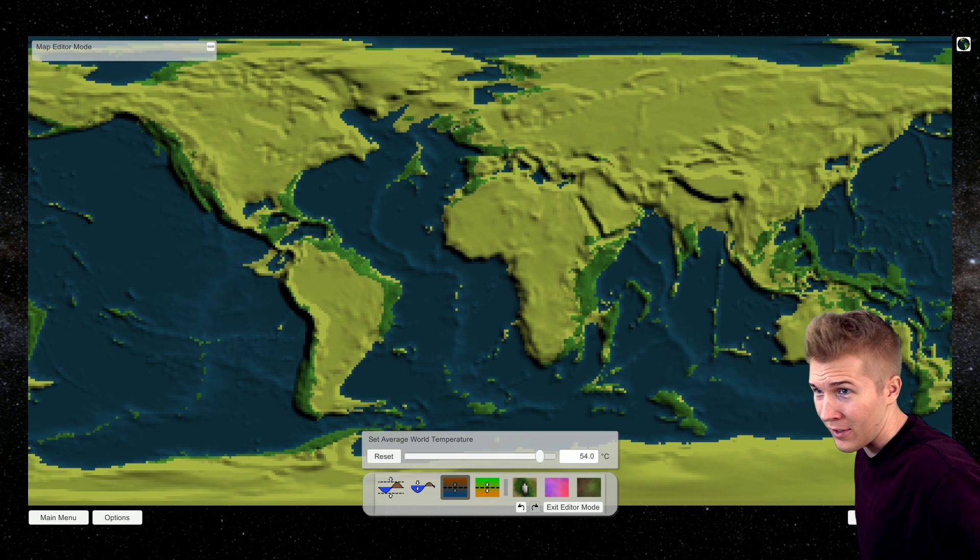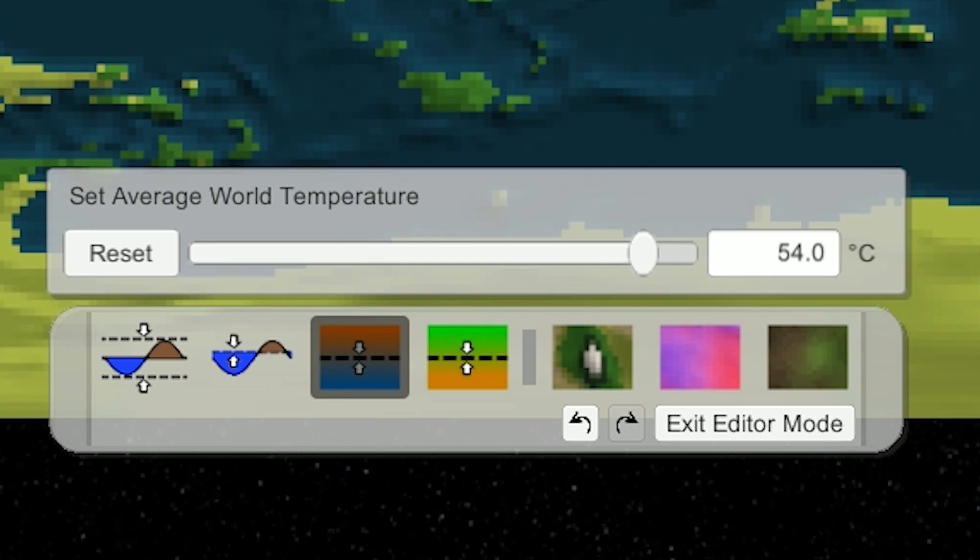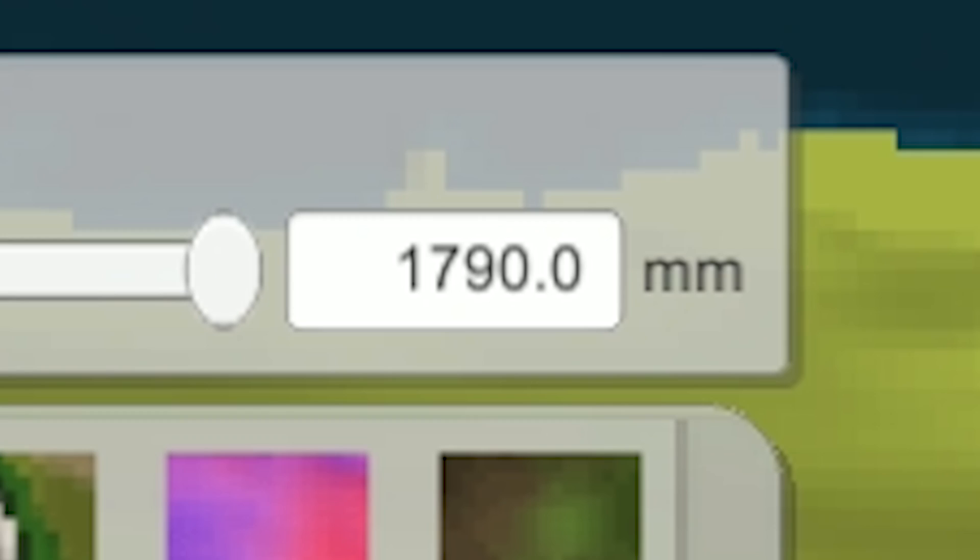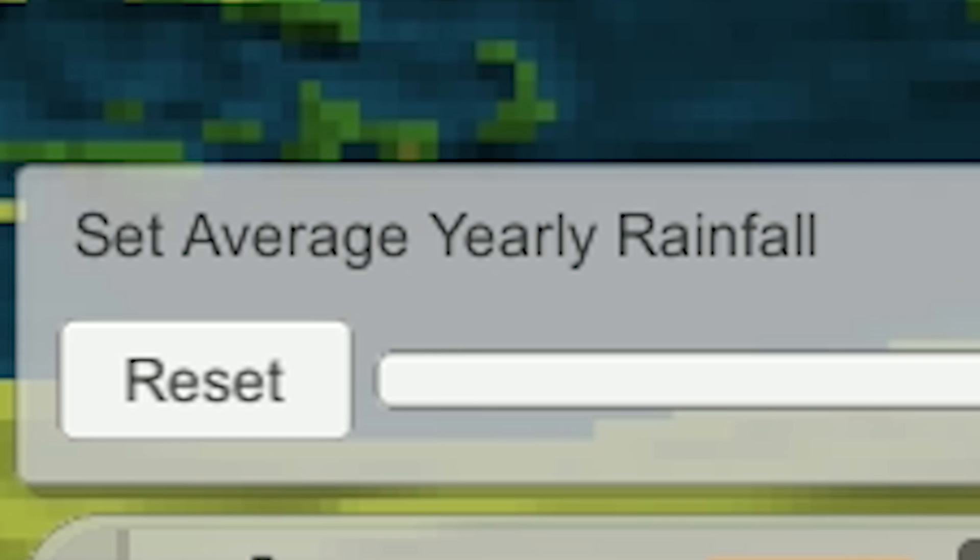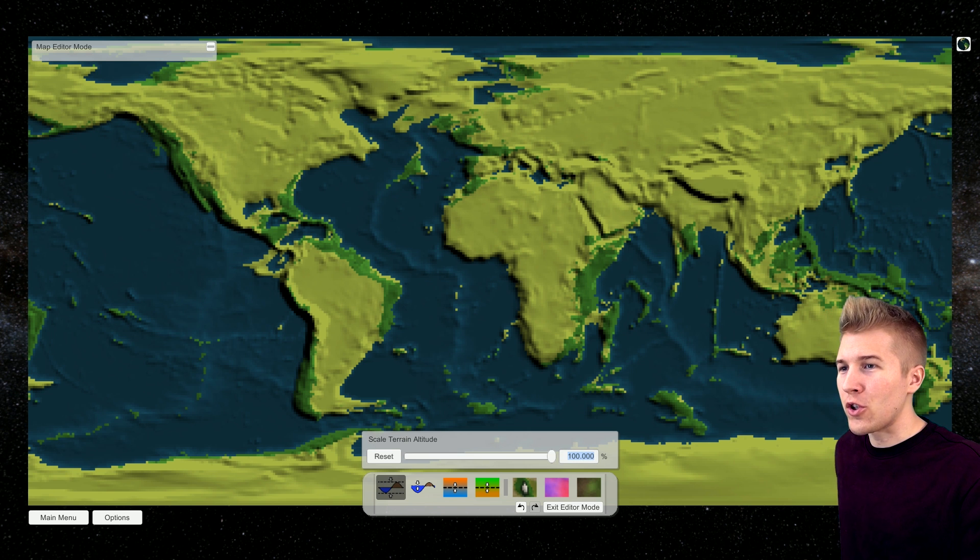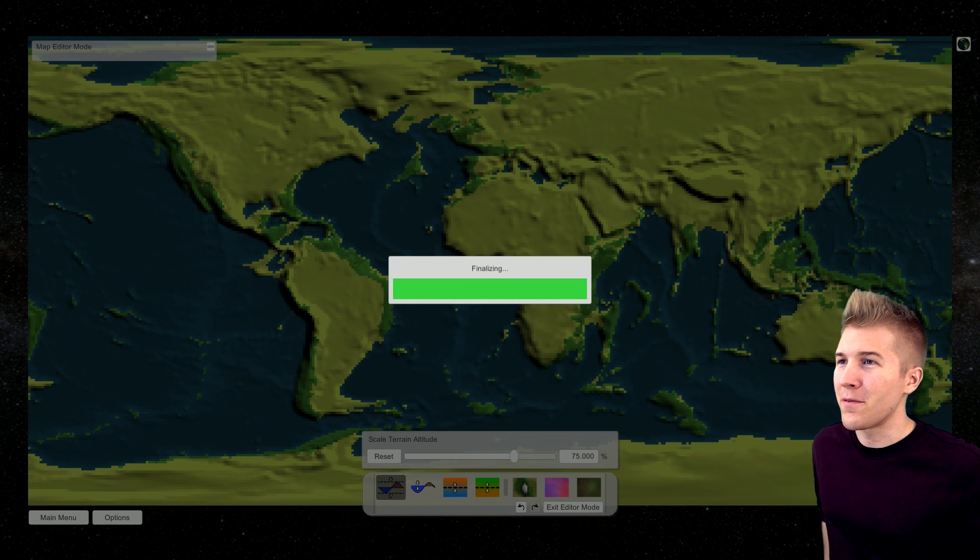Right now, average world temperature's like 54. I still need the humans to survive without water, so I think this is gonna be okay. Average rainfall, that seems a bit high to be honest, but I'm not sure entirely. Let's just keep it like that. It's better to be green than just have a massive desert. So we're just gonna change this terrain altitude to about, let's just start at 75% and see what happens.